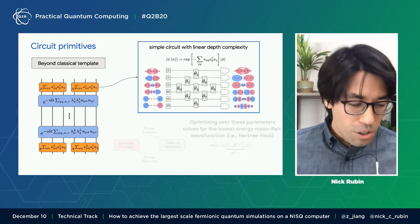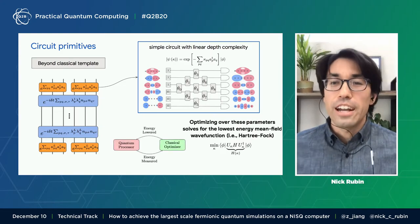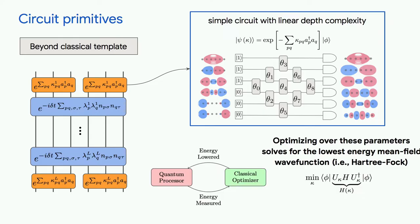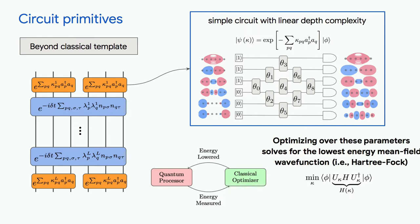Now, if you couple that with energy minimization, you actually recover the Hartree-Fock theory. And so effectively what you're doing is optimizing over optimal bases to construct a Slater determinant. And this is kind of the same thing that you're doing in Hartree-Fock and when you solve the Kohn-Sham equations.